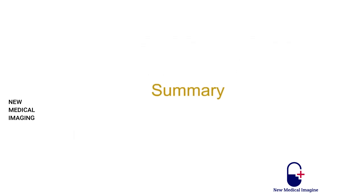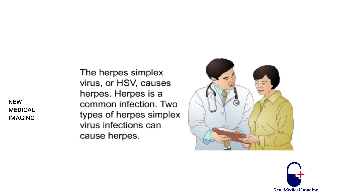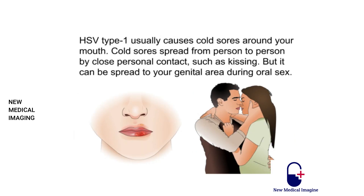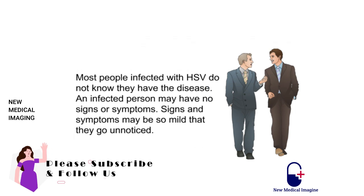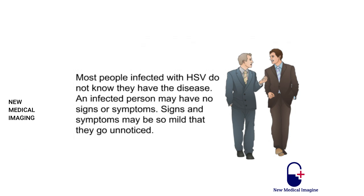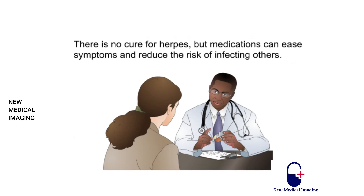In summary: The herpes simplex virus, or HSV, causes herpes, a common infection. HSV type 1 usually causes oral cold sores spread by close contact such as kissing, but can spread to the genitals during oral sex. HSV type 2 commonly causes genital herpes, spreading through sexual and skin-to-skin contact, and is common and highly contagious. Most people infected with HSV do not know they have the disease, as symptoms may be absent or very mild. There is no cure for herpes, but medications can ease symptoms and reduce the risk of infecting others.